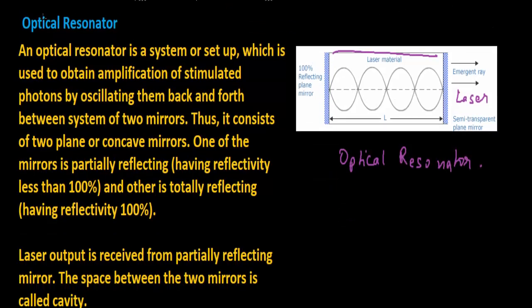An optical resonator is a system or setup which is used to obtain amplification of stimulated photons by oscillating them back and forth between a system of two mirrors. One mirror is partially reflecting and another is totally reflecting. Laser output is received from the partially reflecting mirror. The space between the two mirrors is called the cavity.